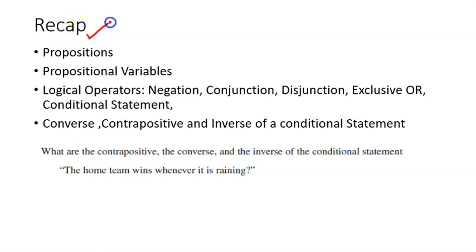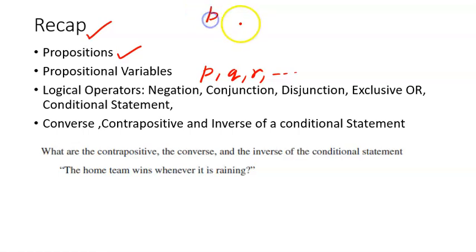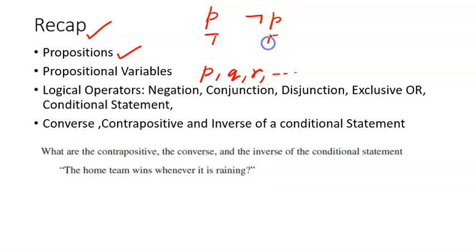First is the recap part. We have talked about what is a proposition, and we also talked about propositional variables — we use different symbols p, q, r, etc. to denote propositions. We have seen the negation of a statement: if p is true, negation of p is false, and if p is false, negation of p is true.